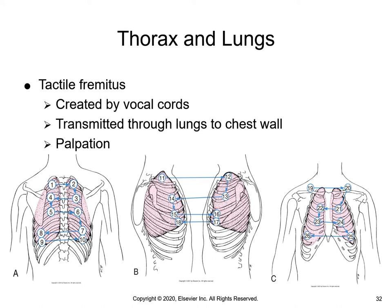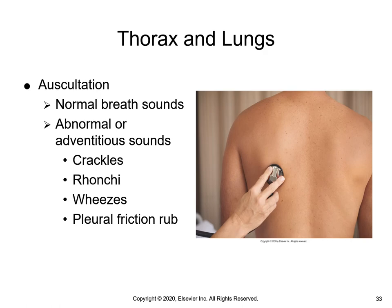A systematic pattern — posterior, lateral, then anterior view — is followed when palpating and auscultating the thorax. The use of auscultation is to assess the movement of air through the tracheobronchial tree to detect mucus or obstructed airways. Normal air flows through the airways in an unobstructed pattern. Recognizing sounds created by normal airflow allows the nurse to detect sounds caused by airway obstruction.